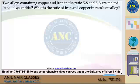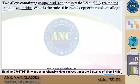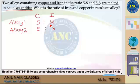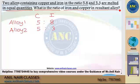The next question: two alloys containing copper and iron in the ratio 5:8 and 5:3 are melted in equal quantities. The very important word in this question is 'equal quantities.' There are two alloys — alloy 1 and alloy 2. In alloy 1, copper and iron are in the ratio 5:8; in alloy 2, it is 5:3. They are melted in equal quantity. What is the ratio of iron and copper in the resultant alloy?